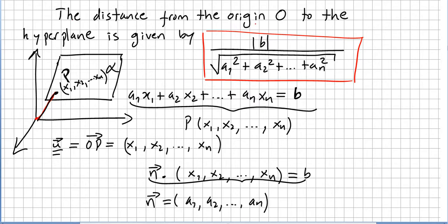So the distance from the origin O to the hyperplane is given by the absolute value of B dividing the square root of a1 squared plus a2 squared plus an squared.